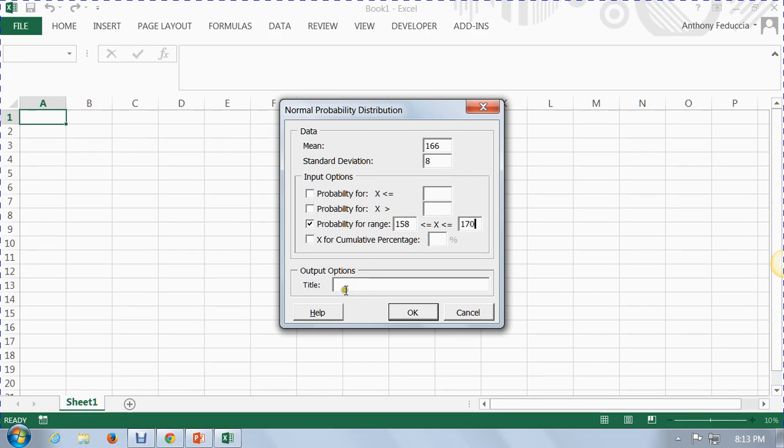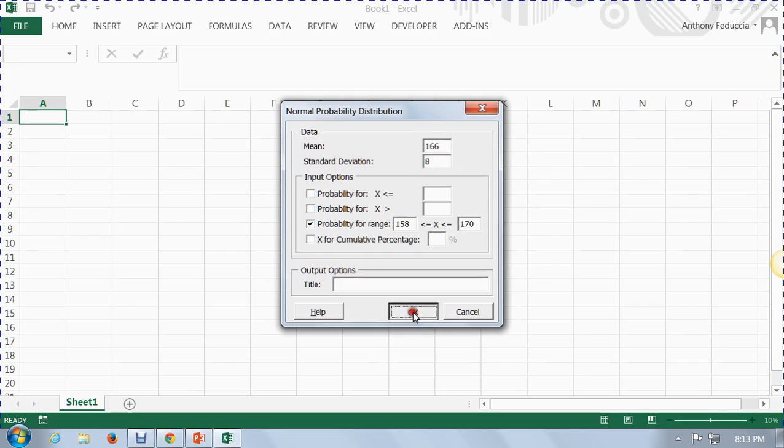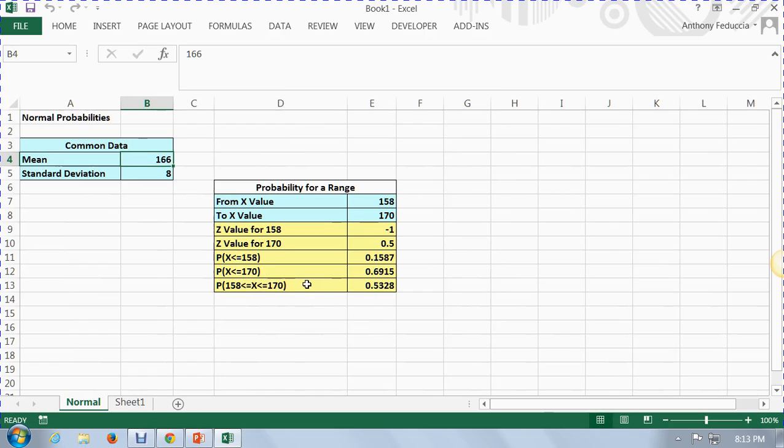And so, you could put a title in here, you know, women's age. Anyway, click on OK. And here's what it gives you. It tells you the mean, the standard deviation. And over here, it shows you, right here, it shows you that the probability of a woman's height is between 158 and 170. It's 0.5328, exactly the same number that we got before. Only, we had to use a couple of steps then. Here, it shows you 6915, which we found. It shows you 1587. But PHStat2 has the advantage of doing it in just one step, less chance of making a mistake.